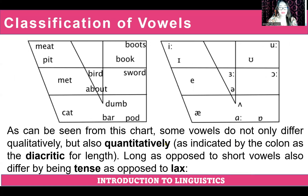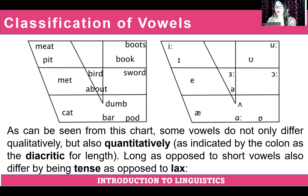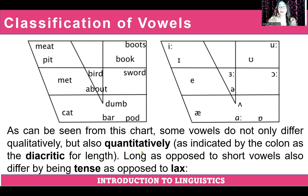As can be seen from this chart, some vowels do not only differ qualitatively but also quantitatively, as indicated by the colon as a diacritic for length. I have given you the diacritic symbols and their definition. When a symbol has a colon on it, it means the vowel should be pronounced longer.